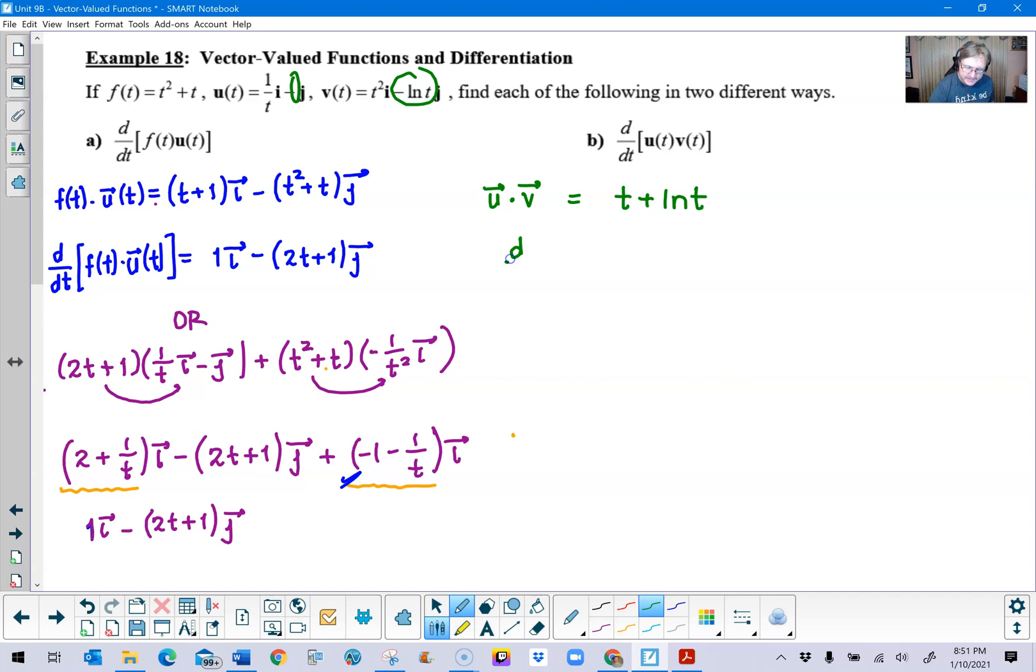So the derivative of this is no longer going to be a vector value function. It's just simply going to be a function of t and it would look something like that. Now, I would strongly encourage you to try this problem by using the product rule. It doesn't take that much more effort and see if indeed it will yield the same answer. And it should.